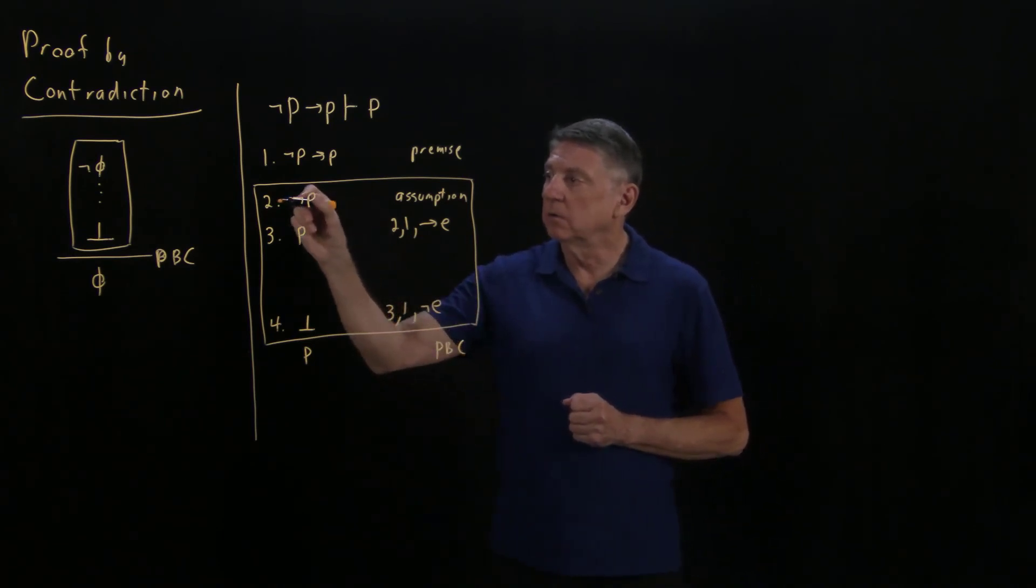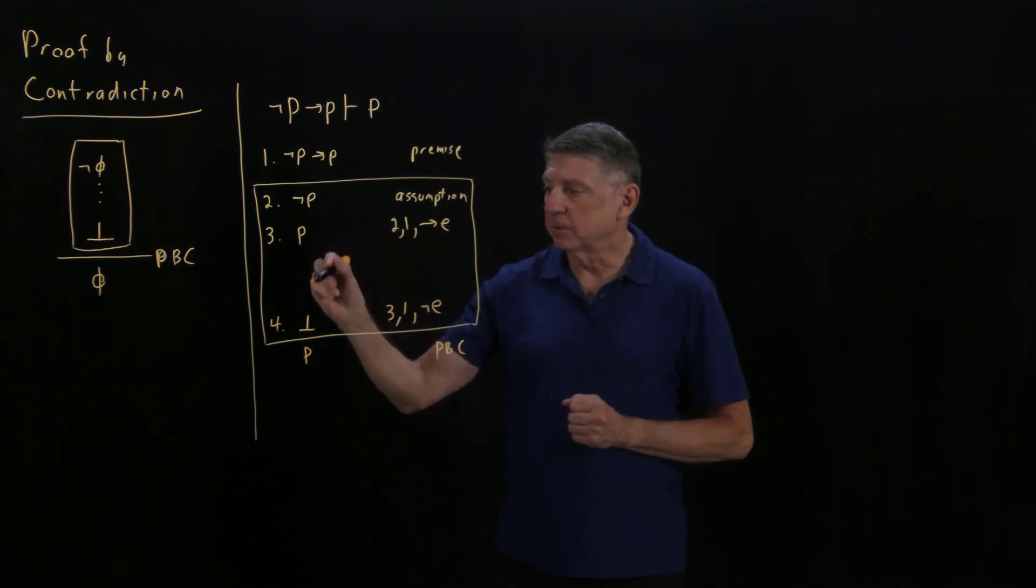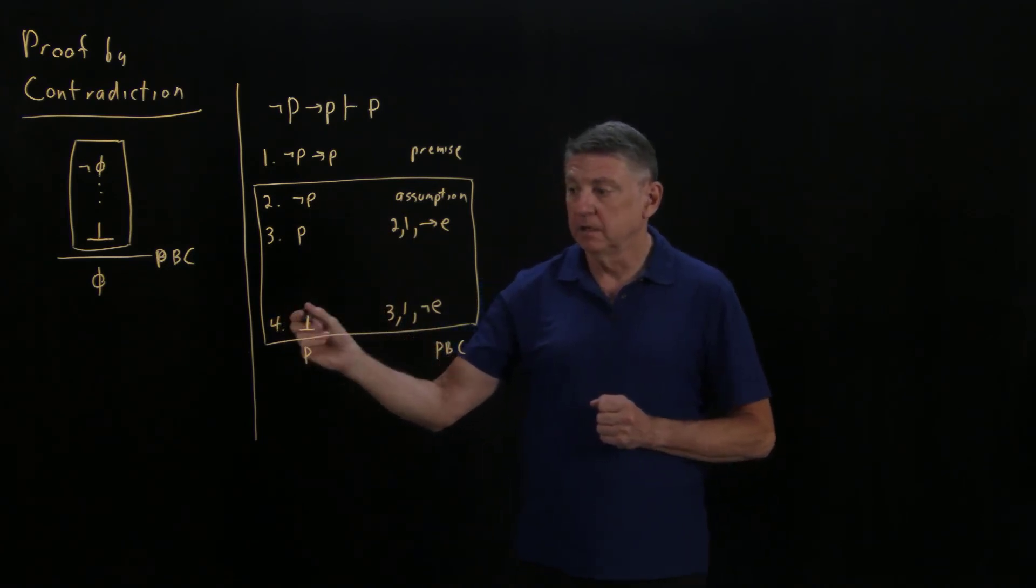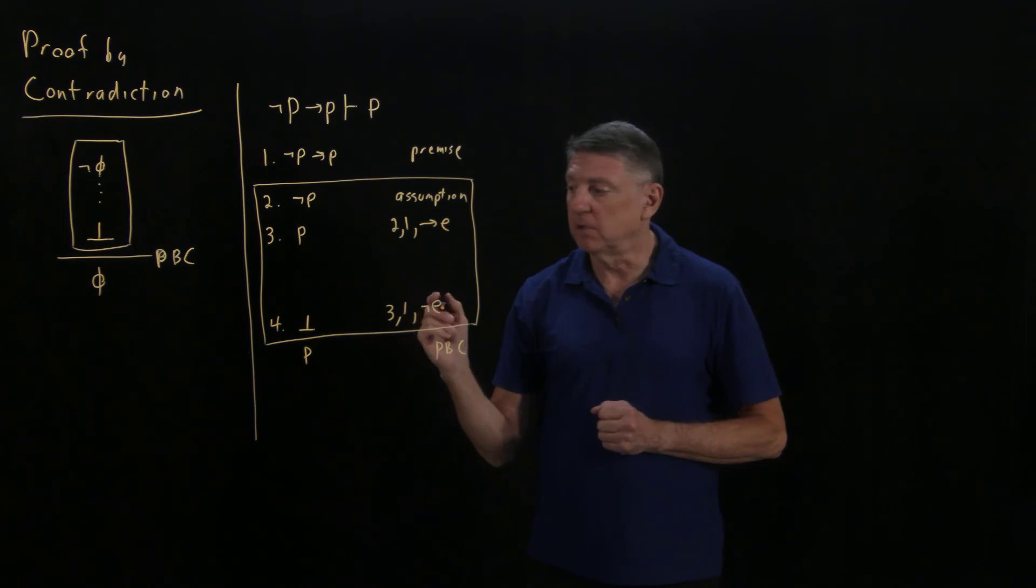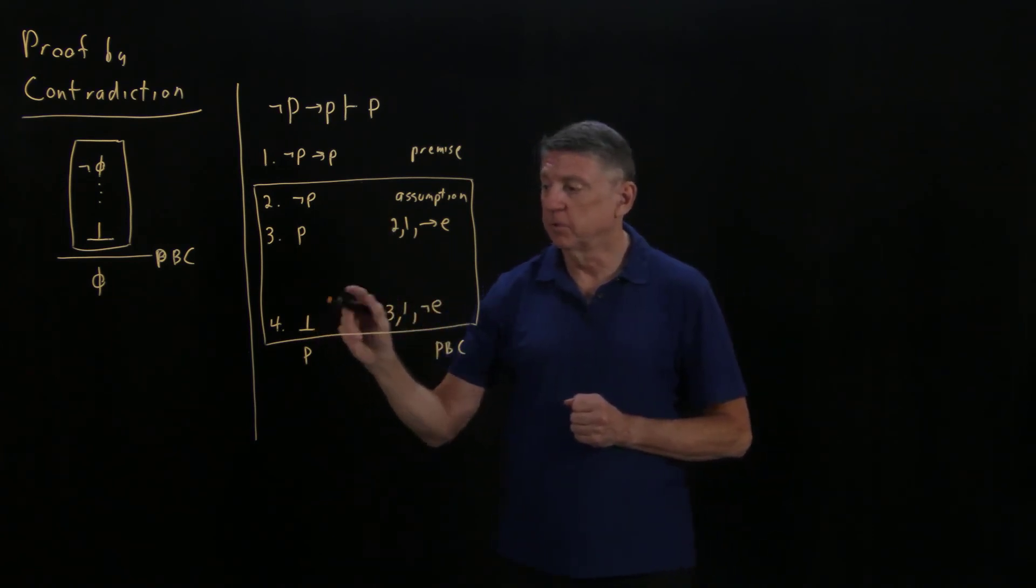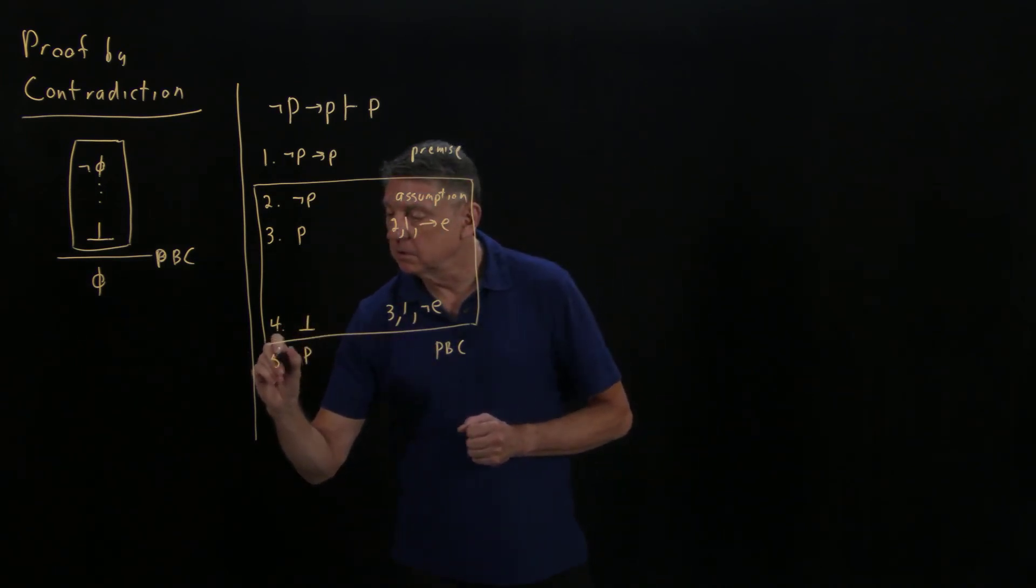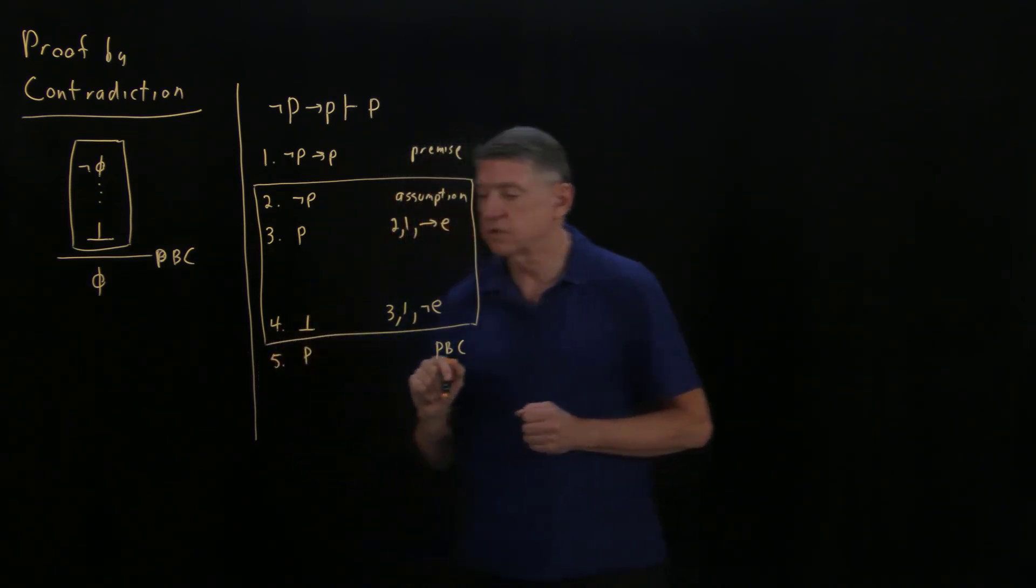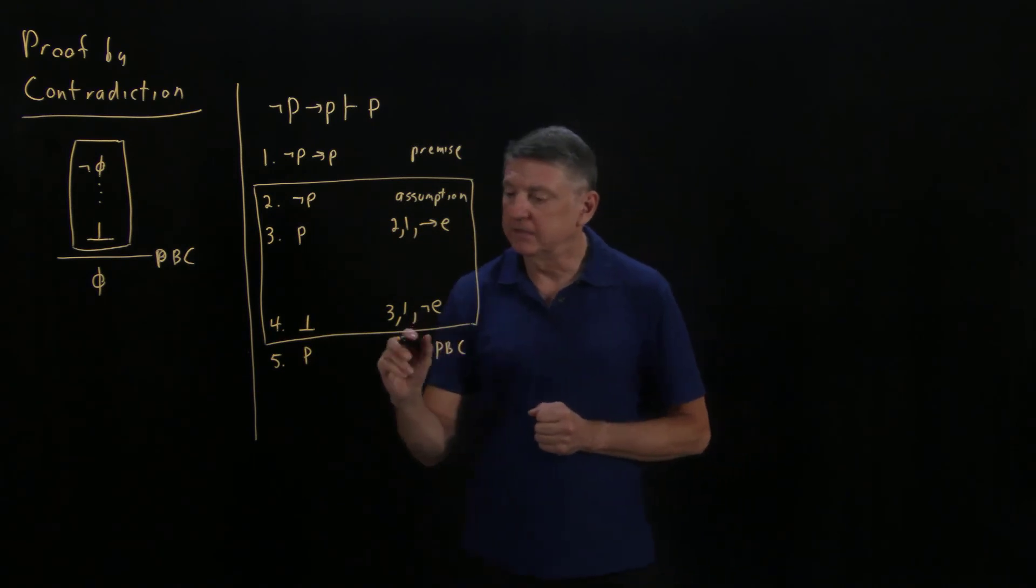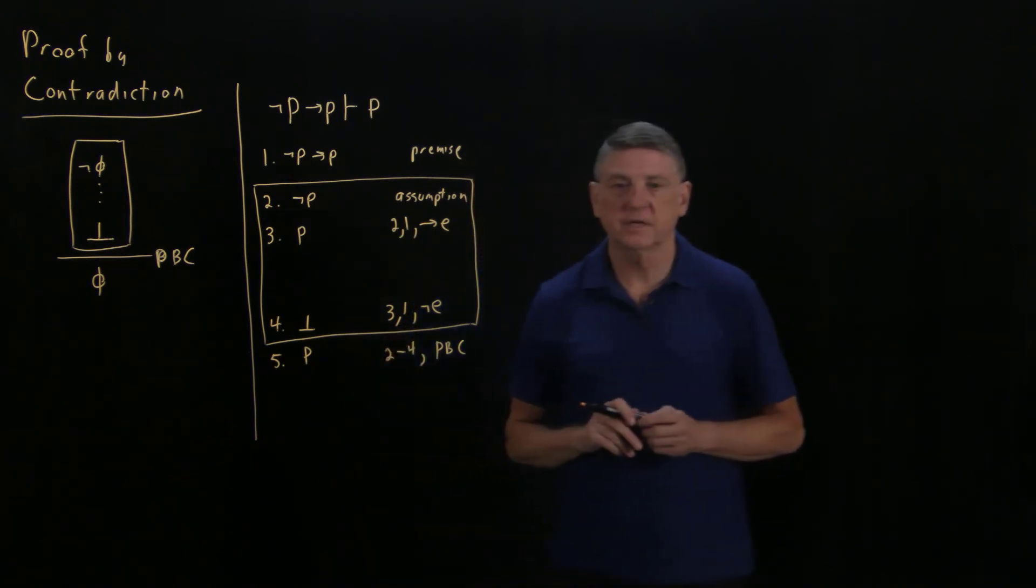Well, we have now filled in our top line, filled in our bottom line. We have a complete line of reasoning that gets us to that bottom line, and so we've accomplished this part of the proof. We can then assign a line number to what is outside the box, and we can give the reason for using that as the construction from line 2 to line 4: proof by contradiction.